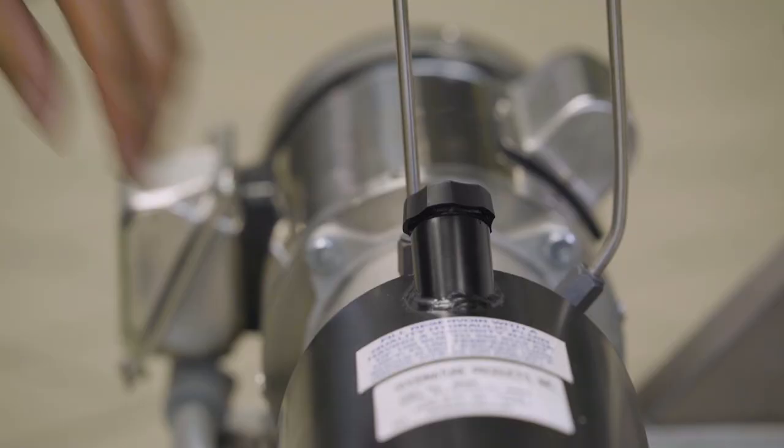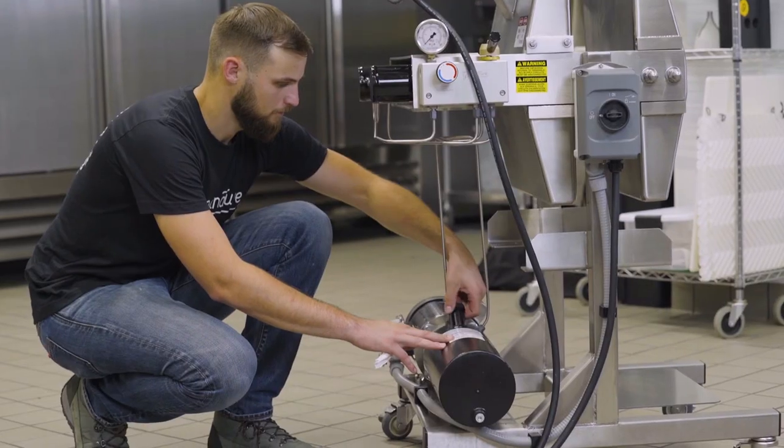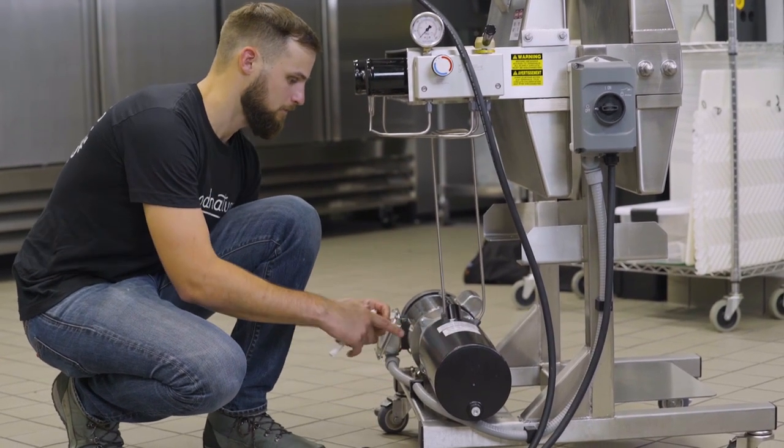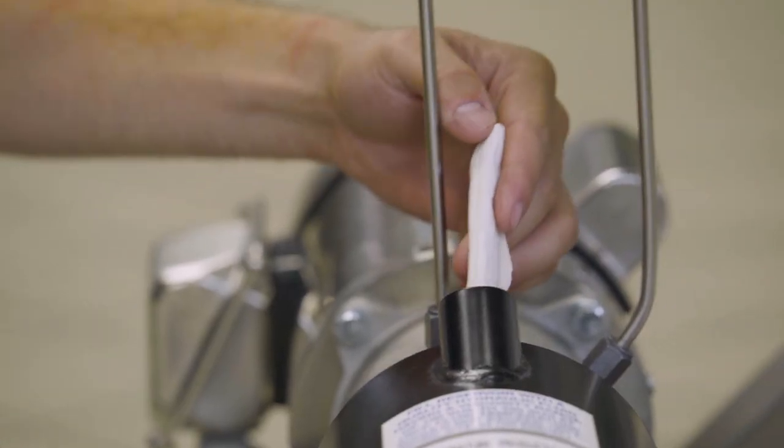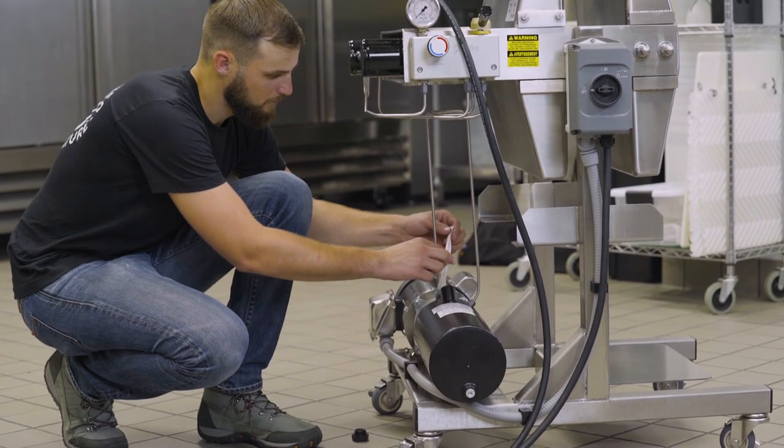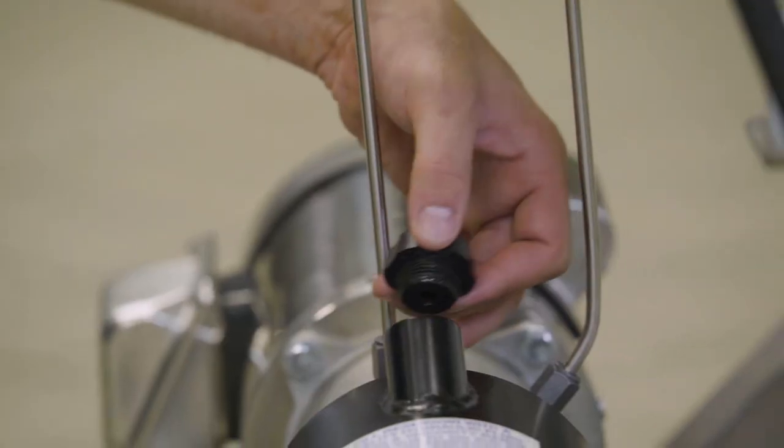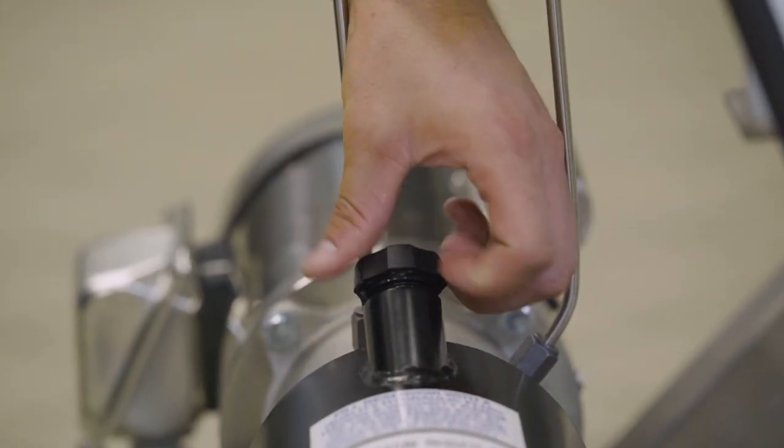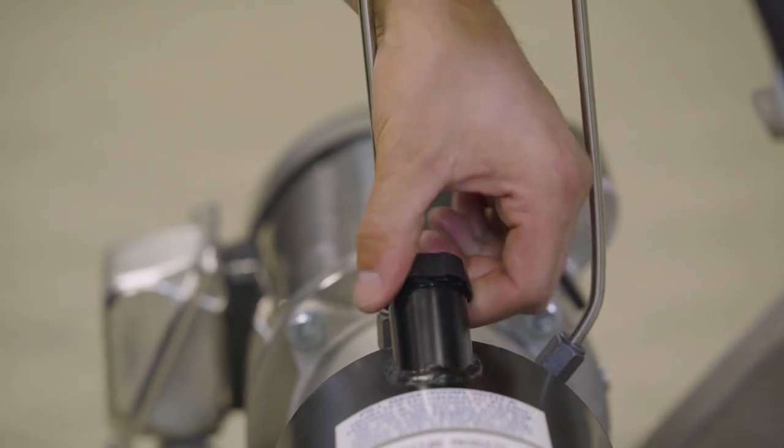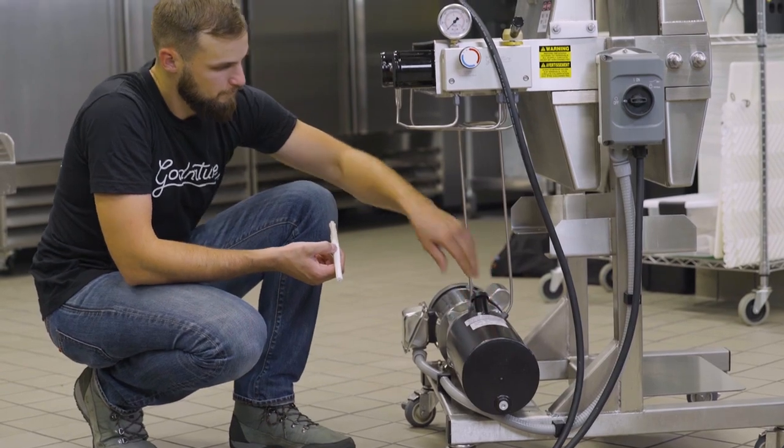Step six is to check the oil level of the hydraulic reservoir with the press fully open. A tip is to remove the breather cap and dip in a rolled up piece of paper towel. The level should be 1 to 2 inches or 25 to 50 millimeters from the top. If a drop in oil level is noticed, check the system for leaks. If oil is needed, replace with the recommended hydraulic oil. Ensure the breather cap is always on during operation and cleaning. A cracked or damaged cap should be replaced immediately.